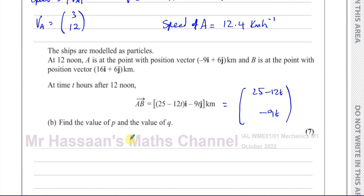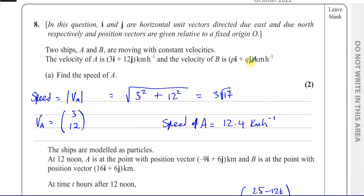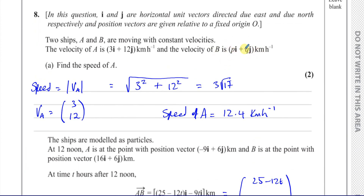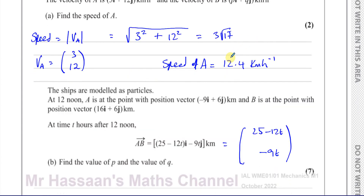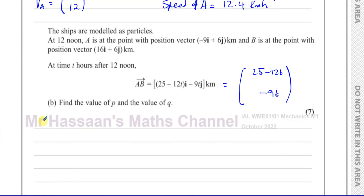We've got to find the values of P and Q, which are the components of the velocity of B. We know that the position vector of an object moving at constant velocity is equal to its initial position plus its velocity vector times the time.